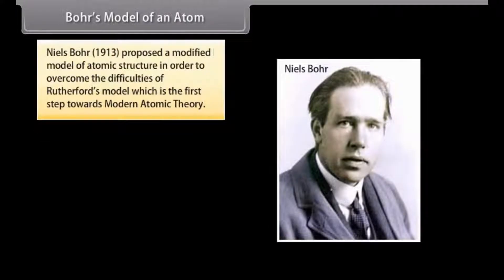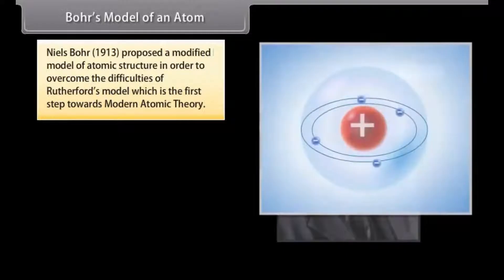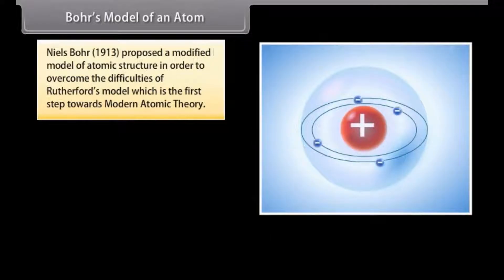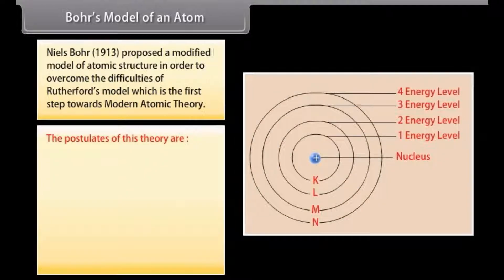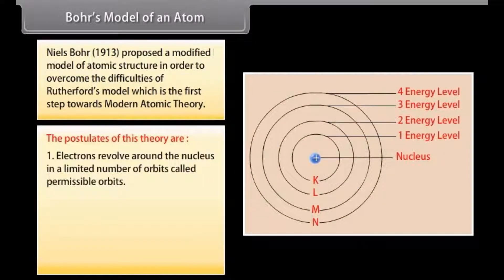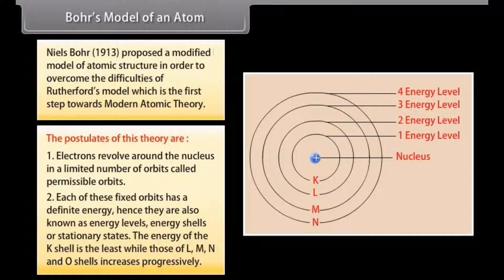Bohr's Model of an Atom. Niels Bohr, 1913, proposed a modified model of atomic structure in order to overcome the difficulties of Rutherford's model, which is the first step towards modern atomic theory. The postulates of this theory are: Electrons revolve around the nucleus in a limited number of orbits called permissible orbits. Each of these fixed orbits has a definite energy, hence they are also known as energy levels, energy shells, or stationary states. The energy of the K shell is the least, while those of L, M, N, and O shells increases progressively.